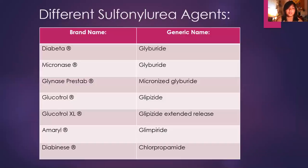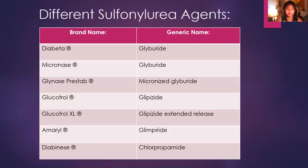Here I listed some brand names you may have heard of or work with in your field, along with their generic names. I believe the most common sulfonylurea would be glipizide — I hear that one a lot, and we use it most on my floor. The other ones I haven't really heard of, so glipizide would be the one to associate this presentation with.